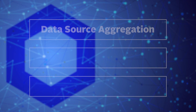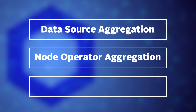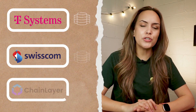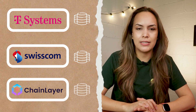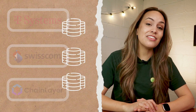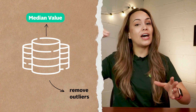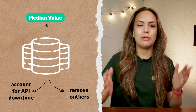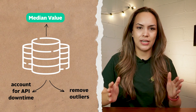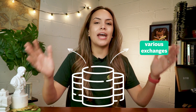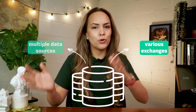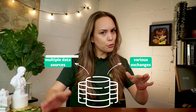The second layer is node operator aggregation. Node operators collectively gather data from multiple independent data aggregators, then take the median value to remove outliers and account for API downtime. This bolsters the data by ensuring each price point is not only an aggregate from various exchanges, but also an aggregate from multiple data sources, further preventing any single point of failure.